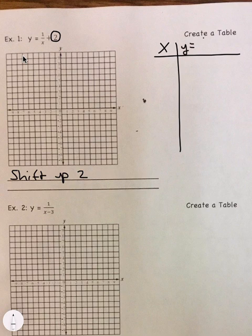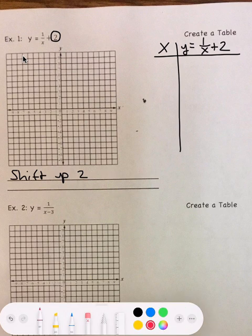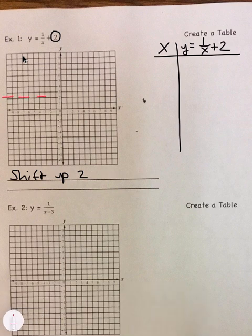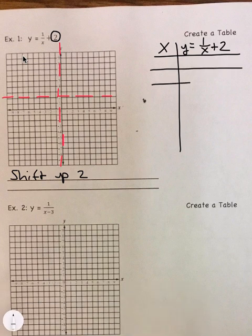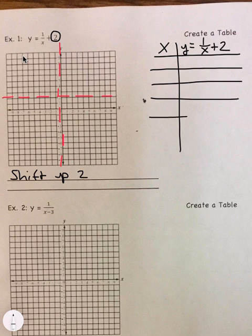So we have y equals 1 over x plus 2. And so when we shift up 2, that means we have to shift up this asymptote here. The other asymptote doesn't shift, so it stays along the y-axis. Going back to then, when we're creating a table, we want to pick points that are on either side of the asymptote.